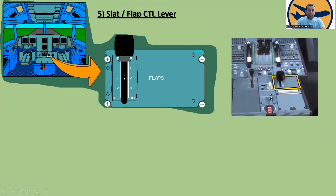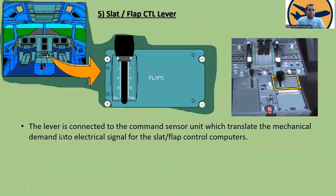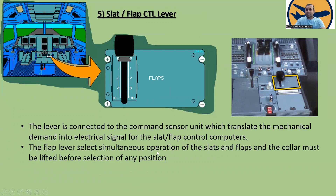Here is the slat/flap control lever. The lever is connected to the command sensor unit, which translates the mechanical demand into an electrical signal for the slat/flap control computers. The flap lever selects simultaneous operation of the slat and flap, and the collar must be lifted before selection of any position.